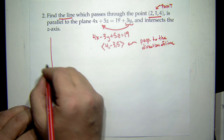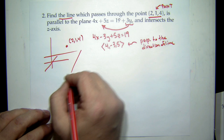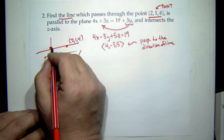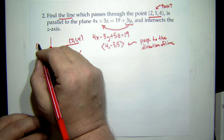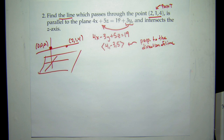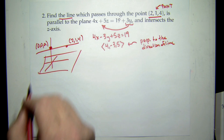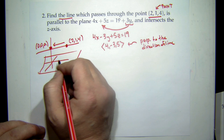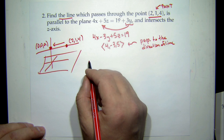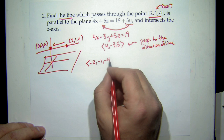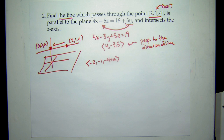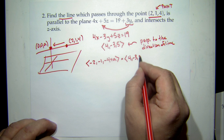The z-axis consists of all points of the form (0, 0, a). So the line goes from the point (2, 1, 4) to some point (0, 0, a) on the z-axis. The direction vector would be (−2, −1, a − 4). Since this direction must be perpendicular to the normal (4, −3, 5), we set up the equation: (−2, −1, a−4) · (4, −3, 5) = 0, which gives −8 + 3 + 5(a−4) = 0, simplifying to −8 + 3 − 20 + 5a = 0.